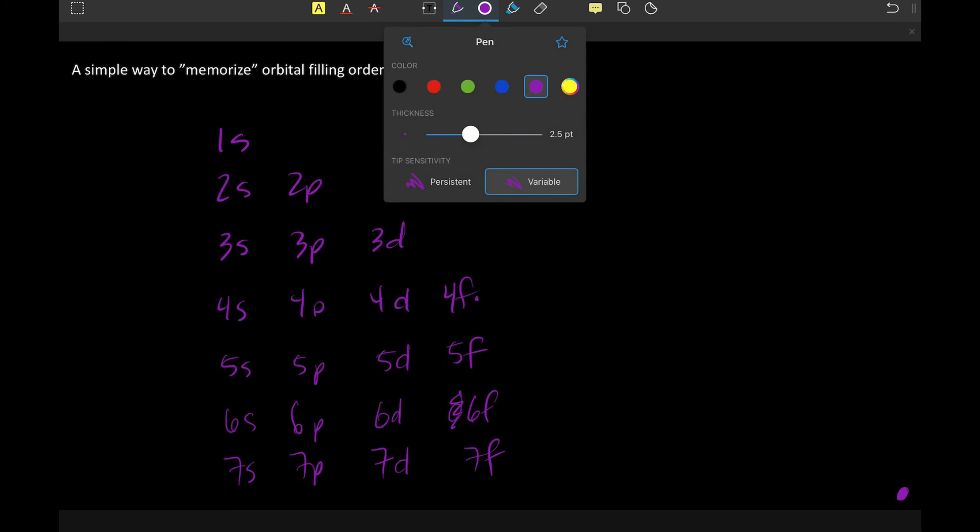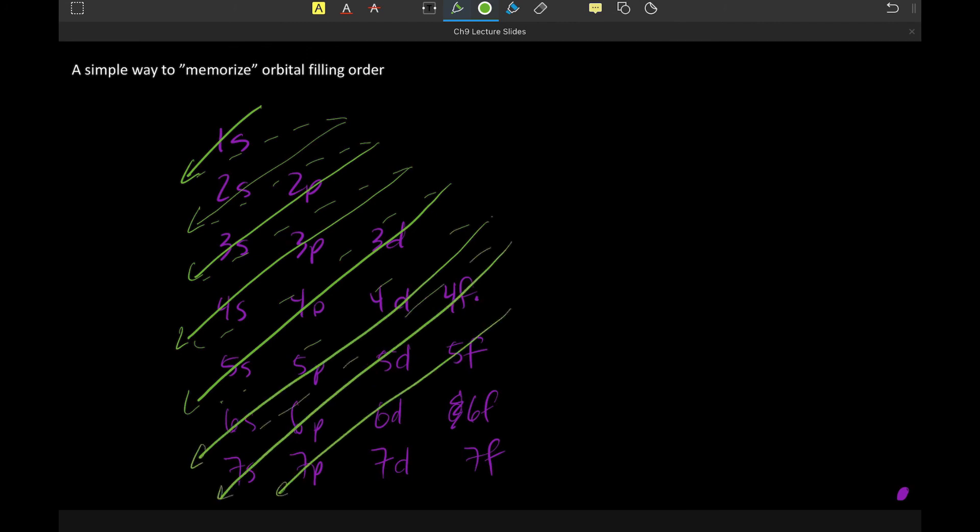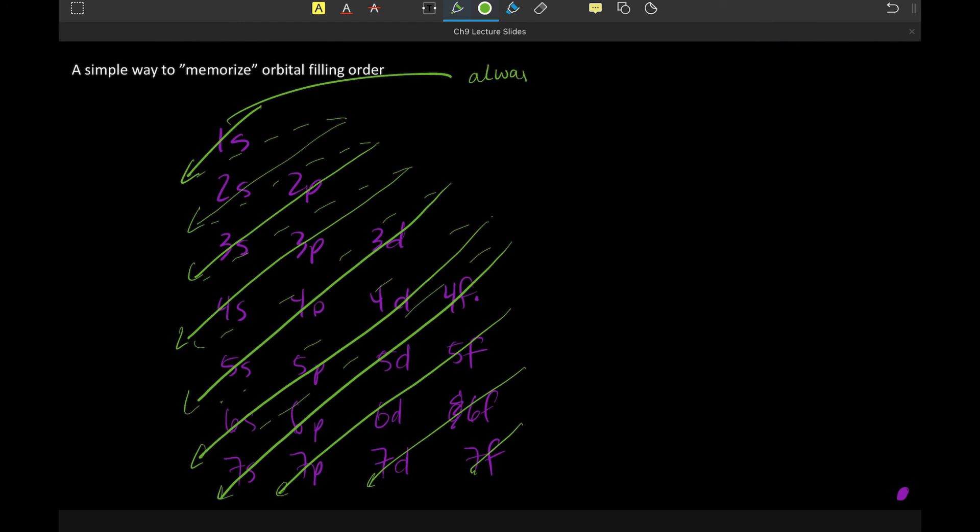And then what we do is we just sort of imagine drawing a diagonal line through each of these. So we start here, draw a diagonal line, and then we take it back over here, and we draw another diagonal line, take it back over here, draw another diagonal, take it back, draw another diagonal, take it back. And then what it does is it basically tells you the order of filling for all the orbitals. And then it's just up to you to remember that this one is a set of always 1. Ss always come in a set of 1, Ps are always a set of 3, Ds are always a set of 5 orbitals, and Fs are always a set of 7. In terms of how many sets they are, this should say always 1.